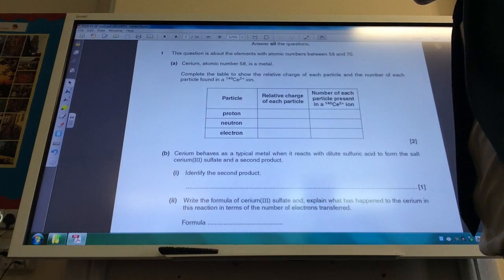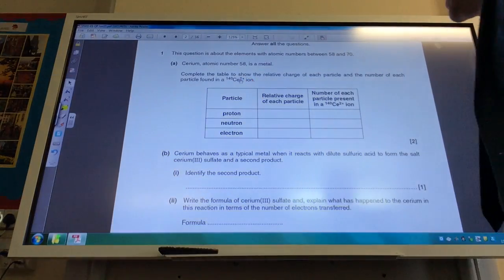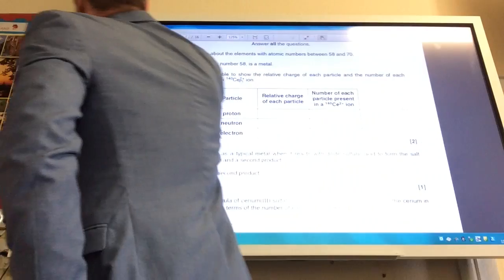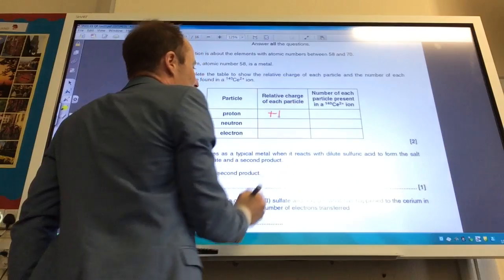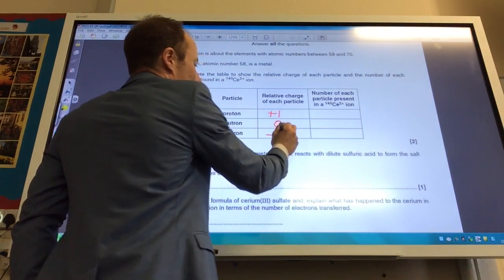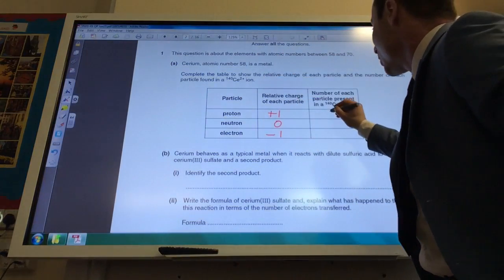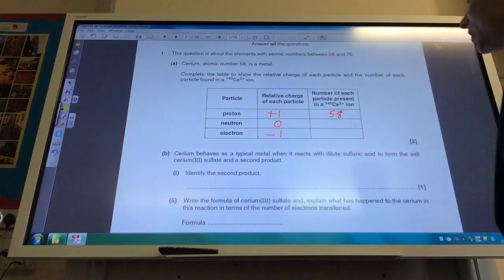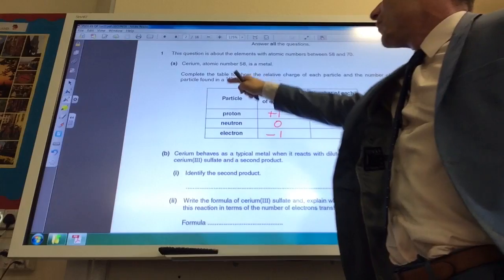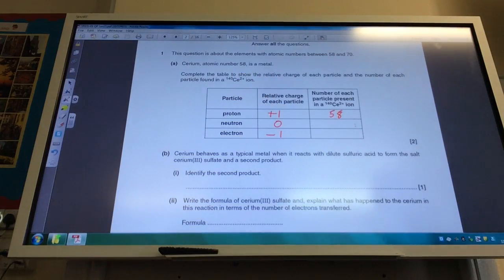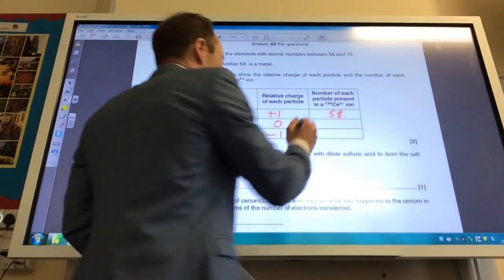It's given me the atomic number of cerium and an ion of cerium. It wants me to tell the relative charge of the proton. The relative charge of a proton is plus 1, a neutron is 0, and an electron is minus 1. The number of each particle present: they told me the atomic number is 58. The mass number is 140, so neutrons: 140 minus 58 comes to 82.